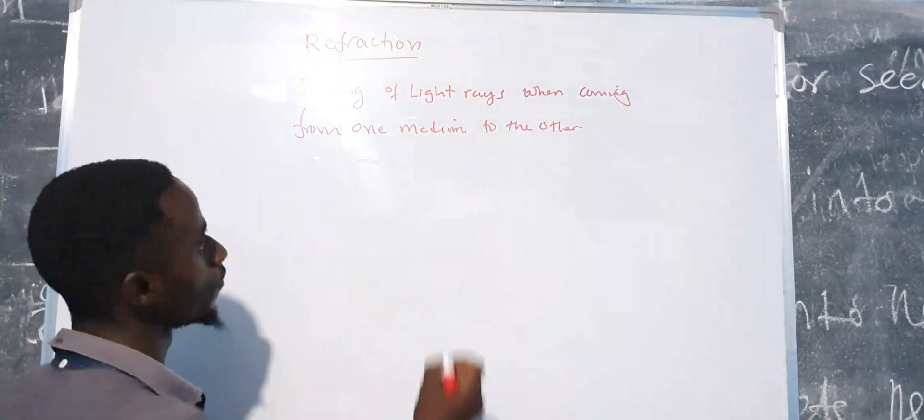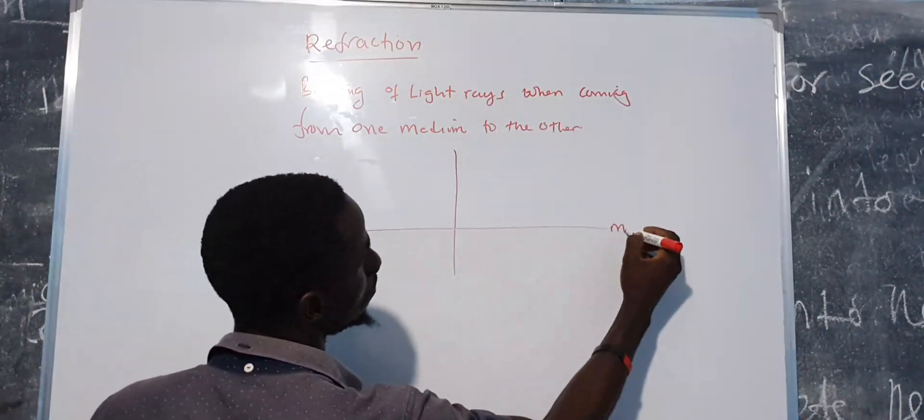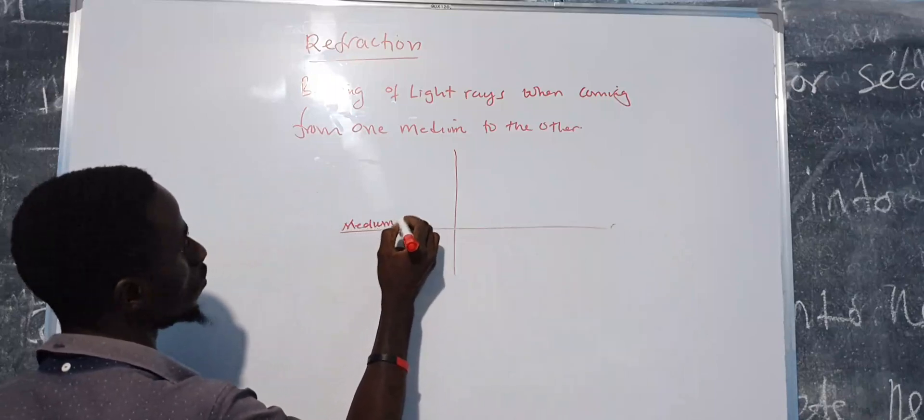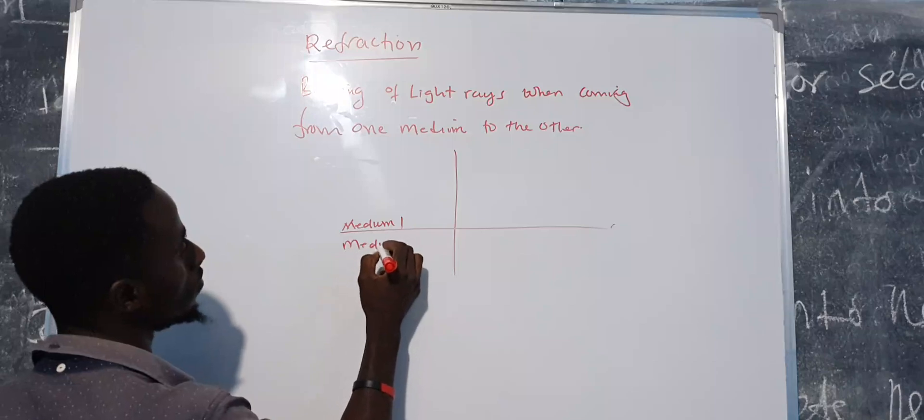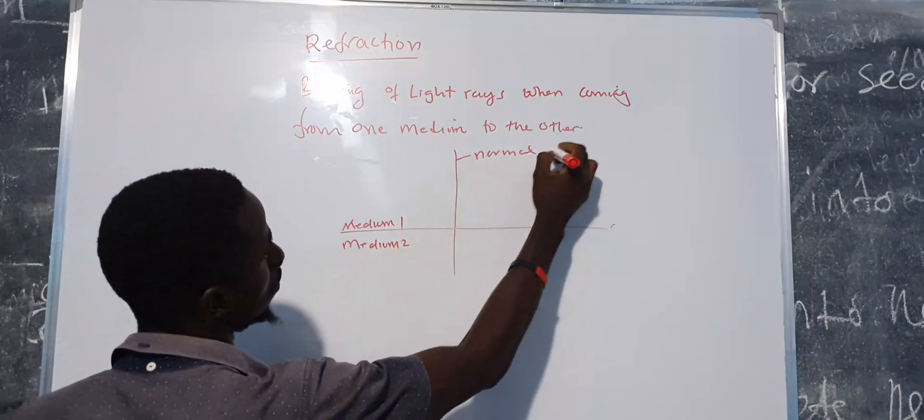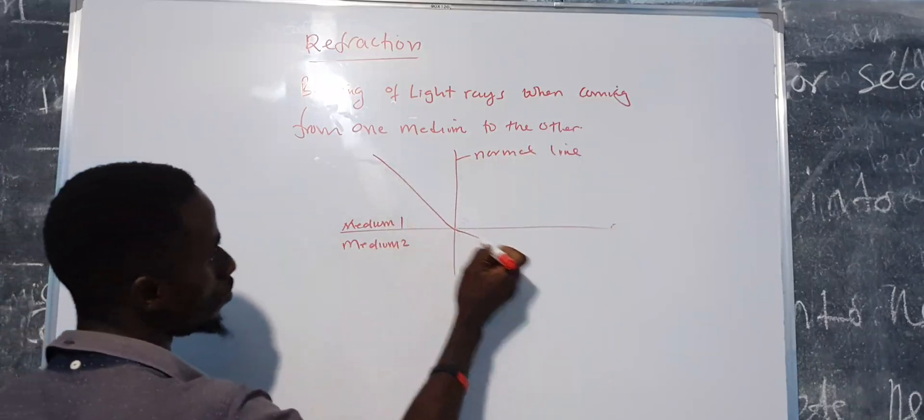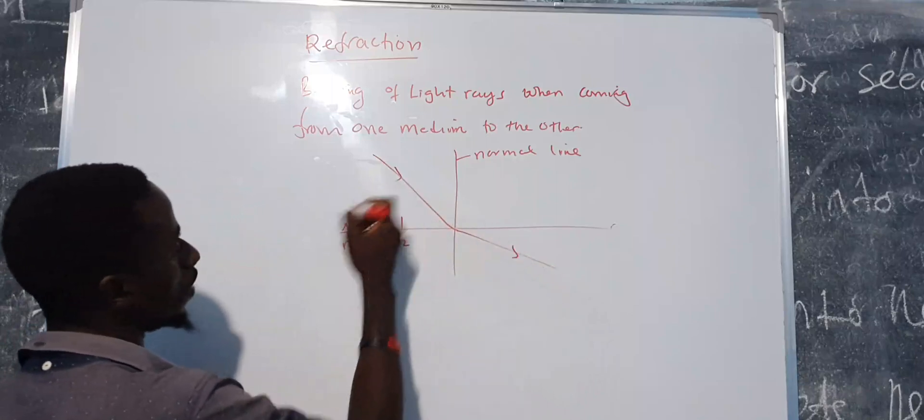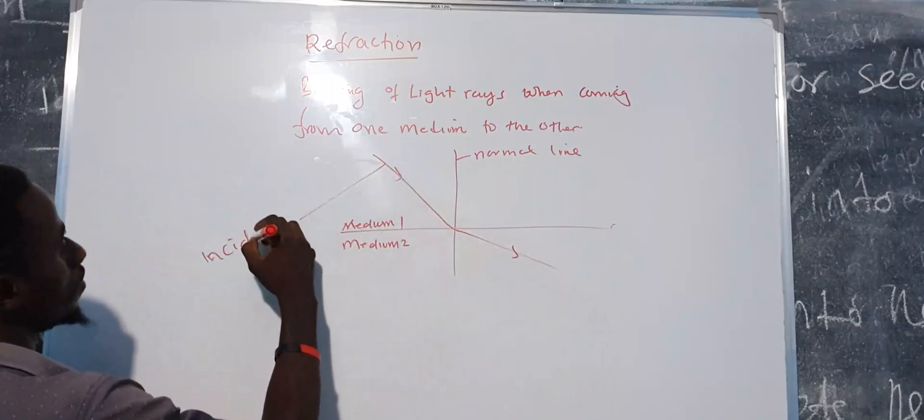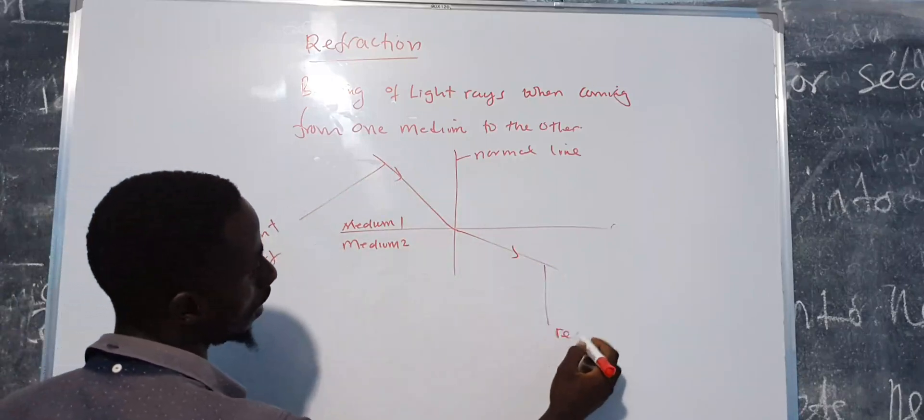Okay, but how does this happen? This is the medium, so we have two mediums: medium one and medium two. So this is the normal line. Light will be coming from here, maybe it will go like that. Now this is what we call the incident ray and this is what we call the refracted ray.